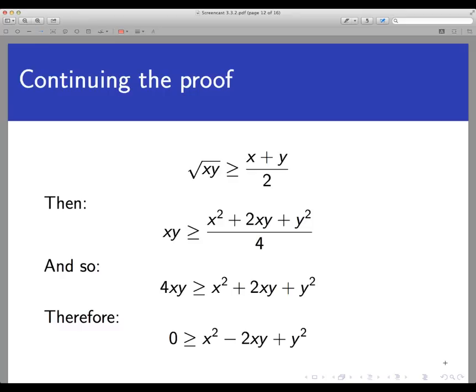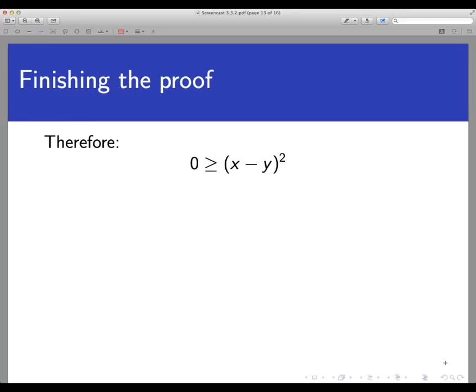But notice, this is actually a perfect square. It's the square of X minus Y. So we can factor it down into this form. Now so far all the steps we've done have been reasonable and valid math steps, but here we arrive at a contradiction.